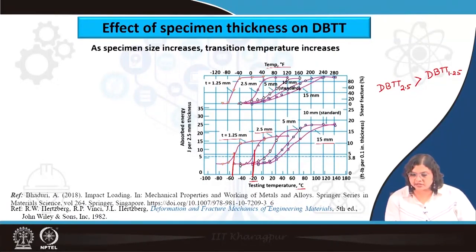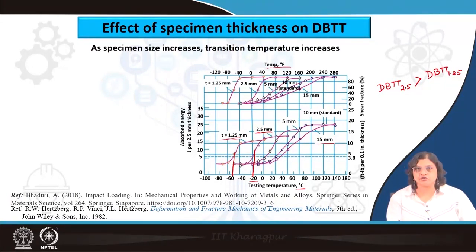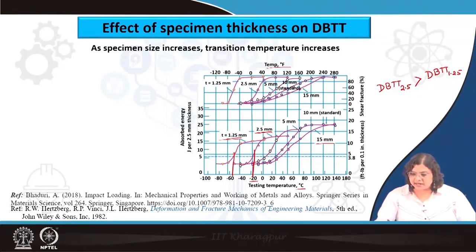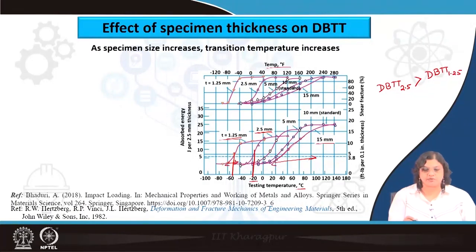If we further double the thickness from 2.5 to 5 mm, there is an even greater jump, and not only that, the nature of the curve also changes. Changing the thickness by an order of magnitude — from 1.25 to 15 mm — the curve has a much shallower slope, meaning the ductile to brittle transition happens over a much larger range of temperature compared to the 1.25 mm specimen, where the transition occurs over a very narrow temperature range.